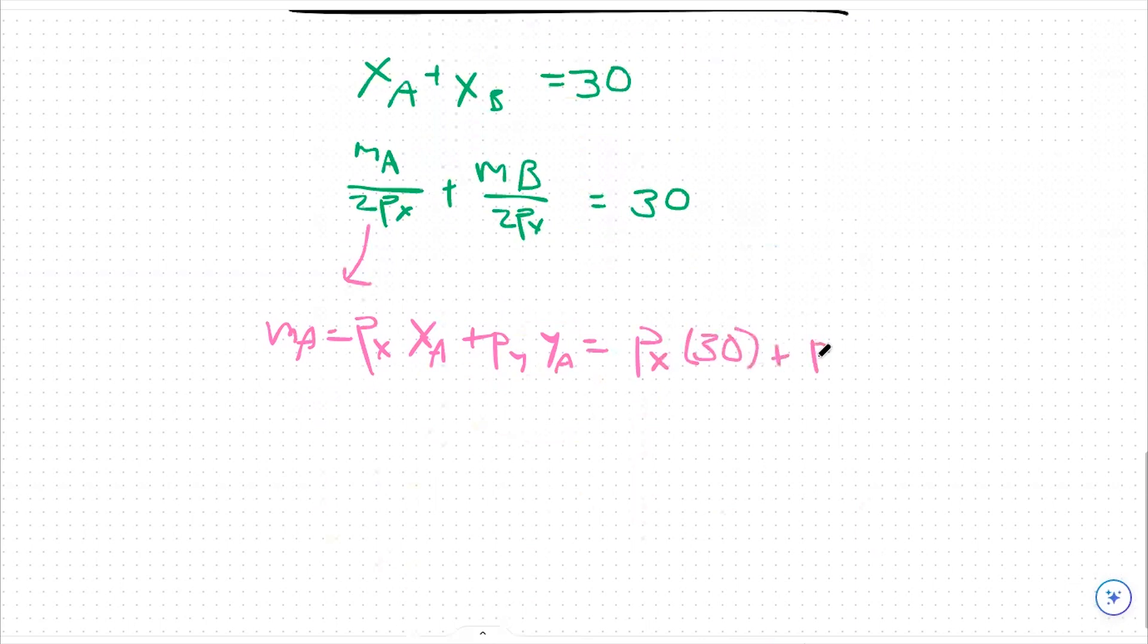And I'm going to say px times 30 plus py, which is one anyways, times zero. We're left with a budget that equals px times 30.